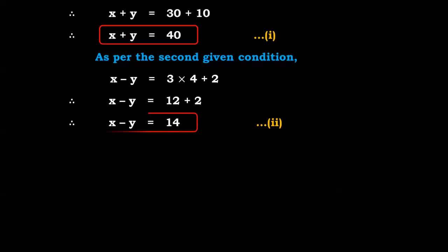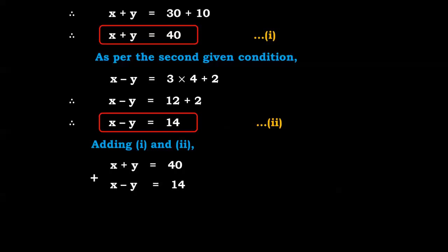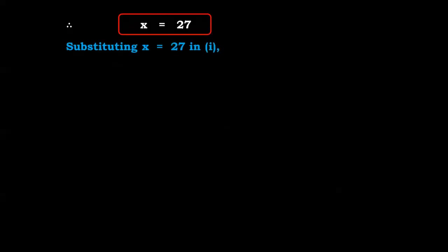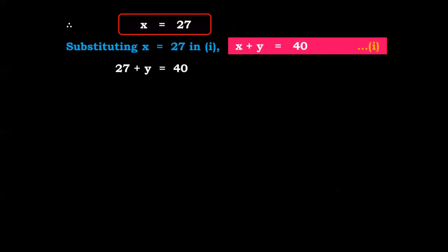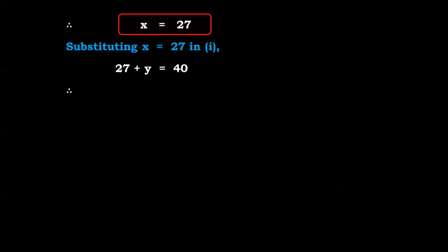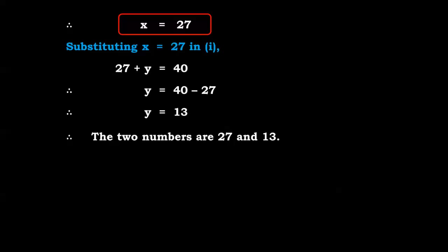Adding equations 1 and 2: x + y = 40 plus x - y = 14. The y terms cancel, giving 2x = 54, so x = 27. Substituting x = 27 in equation 1: 27 + y = 40, therefore y = 13. The two numbers are 27 and 13.